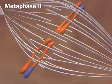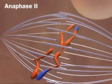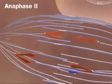In anaphase II, the chromatids finally separate. Remember that they stayed together in anaphase I.